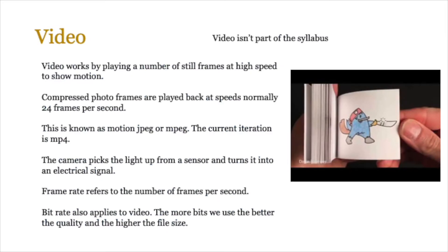Though video isn't part of the syllabus, it's useful to cover briefly. Video works by playing a number of still frames at high speed to show motion — like a flip book. You've got compressed photo frames played back at speeds normally around 24 frames per second. This is known as motion JPEG, or MPEG, and the current iteration is MP4.